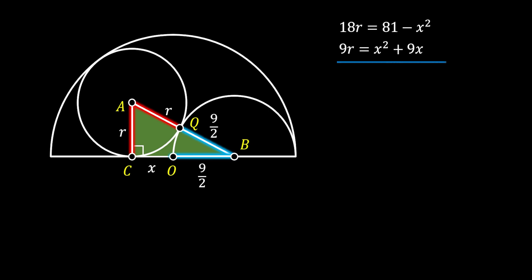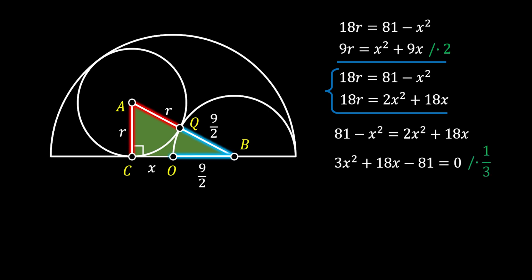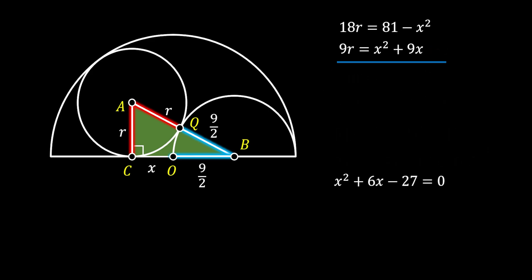We will use this with our previous equation to form a system of equations. To solve the system, we multiply the second equation by 2, so that both equations equal 18R. We can then combine them: 81 − x² = 2x² + 18x. Putting all terms on the same side and simplifying by dividing by 3, we get the quadratic equation: x² + 6x − 27 = 0.